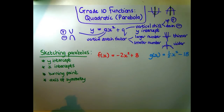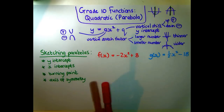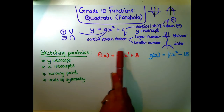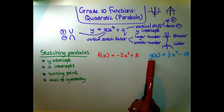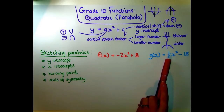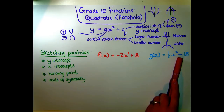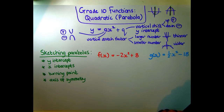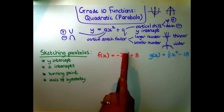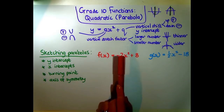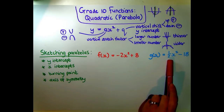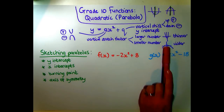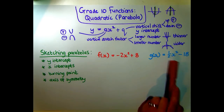To show how to draw these, we'll use two examples. f(x) has a negative a value and a positive q value. g(x) has a positive a value and a negative q value. f(x) has a much higher a value so it will be a thinner parabola, while g(x) has an a value less than one, giving a wider parabola.